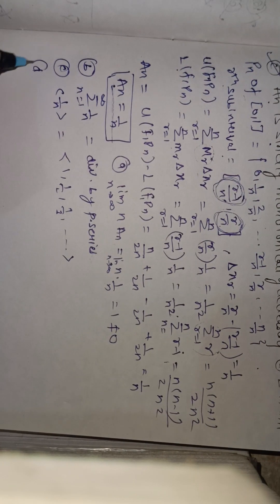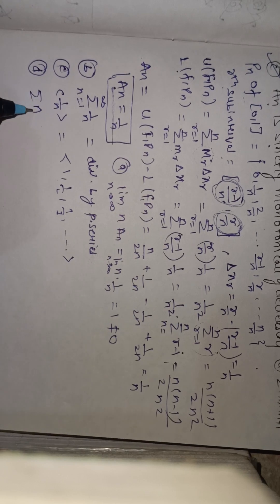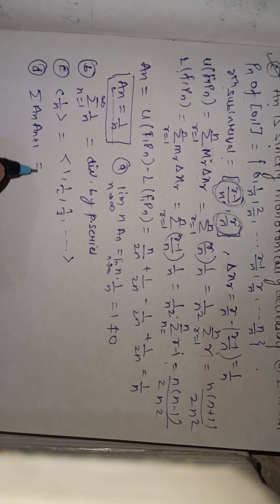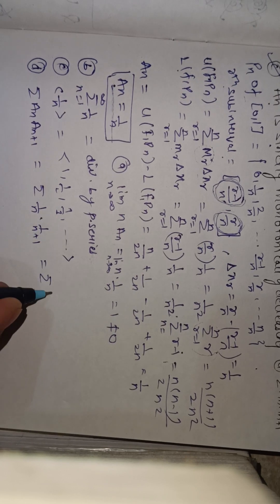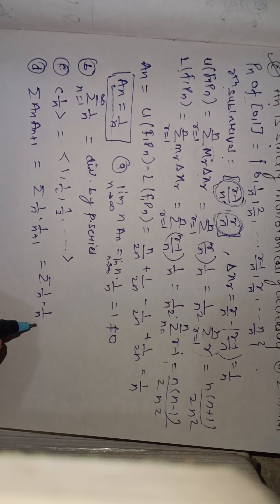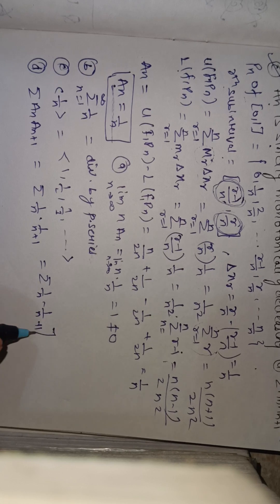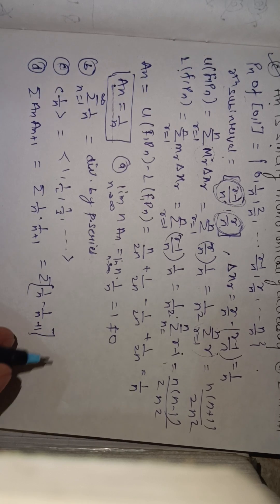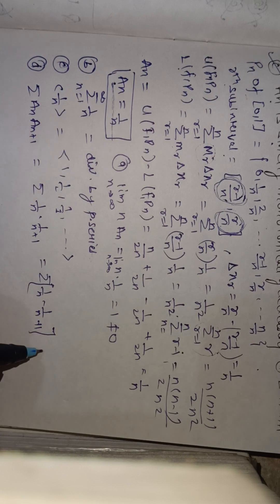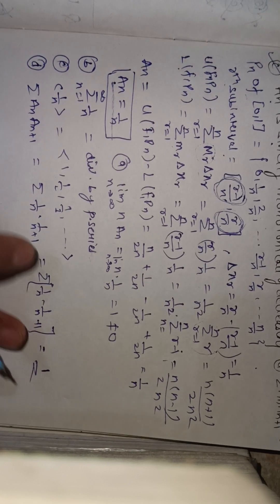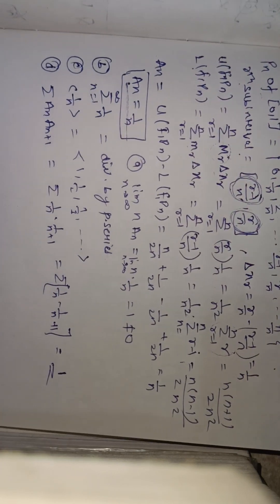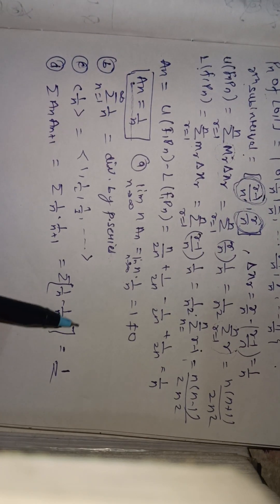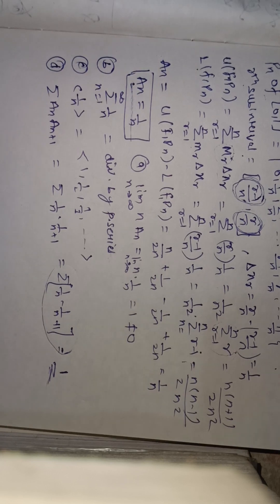Option D considers the series Σ An · A(n+1) = Σ (1/n)(1/(n+1)) = Σ (1/n - 1/(n+1)). This is a telescoping series, and as n → ∞ its sum equals 1. So option D is also correct, as it forms a telescopic series with sum equal to 1.